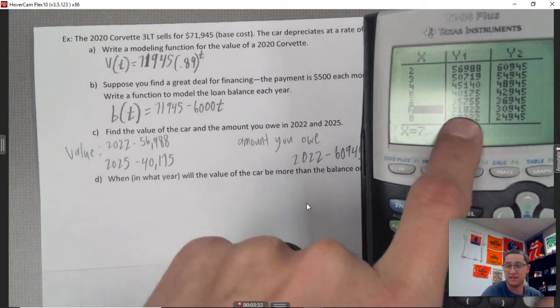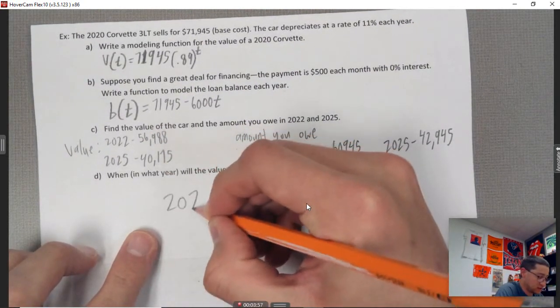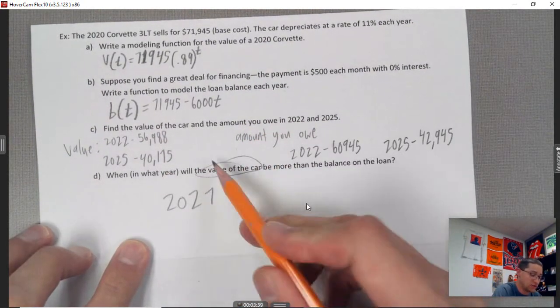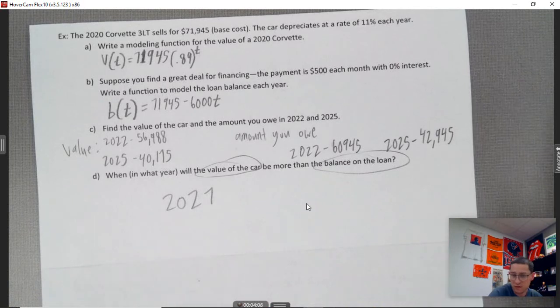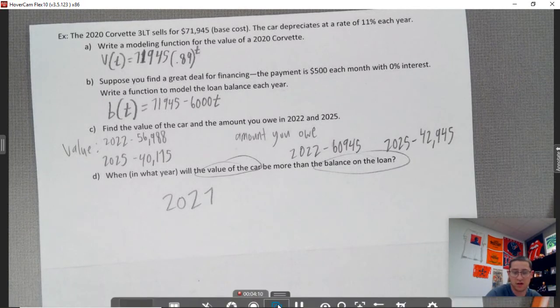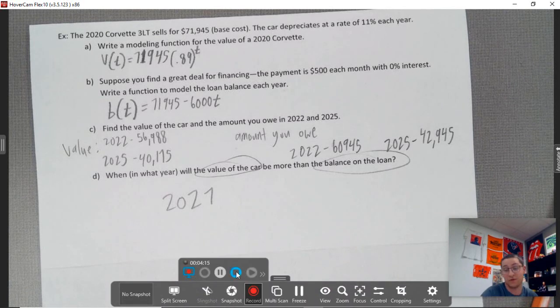Okay, so that's what this problem is getting at with part d. It would be year seven, so that is 2027 - the value of the car will be worth more than the balance that you have left on the loan. So that's that problem, just a quick explanation of that. The problems you'll be doing aren't quite like this, but it is an interesting one to look at. You guys have a good one.